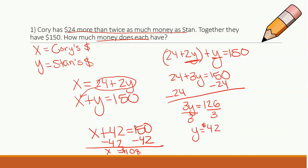So now, x equals and y equals really doesn't help us answer the question. So let's write this out actually with words. So Corey has, he's x, so he's $108. And Stan has $42. This is what I'm actually looking for as the answer. Not x, not y. I'm looking at your written explanation.